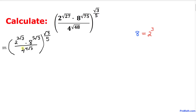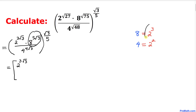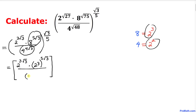Let's also look at base 4 in the denominator. 4 can be written as 2 power 2. So we can rewrite the expression as 2 power 3 times square root of 3, times 2 power 3 — the whole thing raised to power 5 times square root of 3 — divided by 2 power 2 raised to 4 times square root of 3, everything raised to power 5.